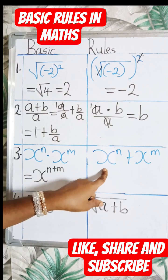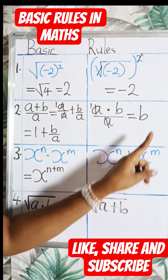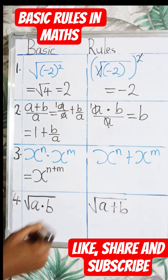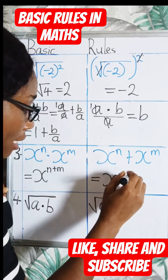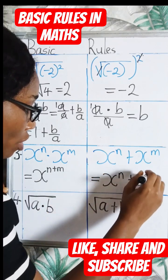Now in this case, we have x raised to the power n plus x raised to the power m. What do we do? This is equal to x raised to the power n plus x raised to the power m.